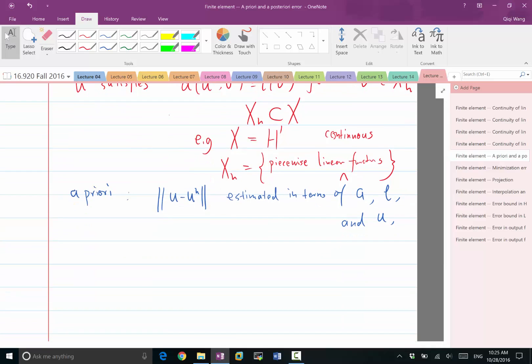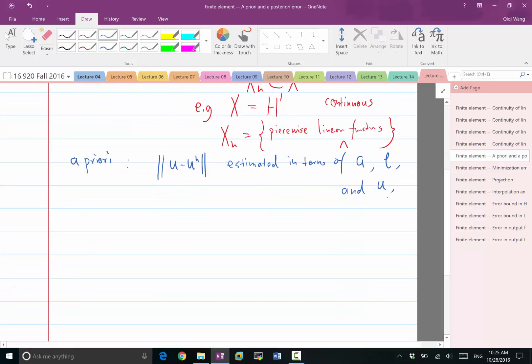Okay? So, because it's called a priori, because we don't know U, we don't know what U is.